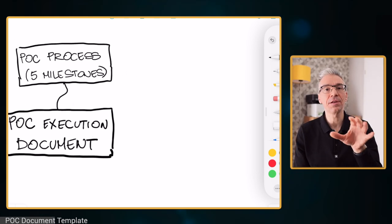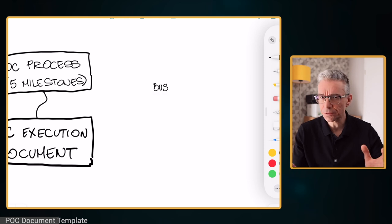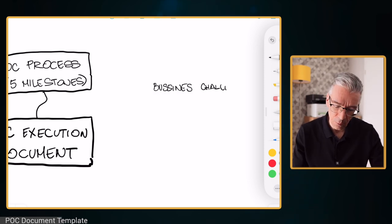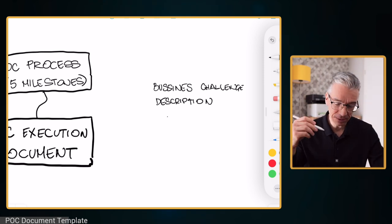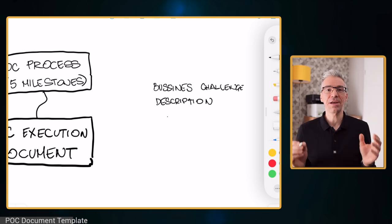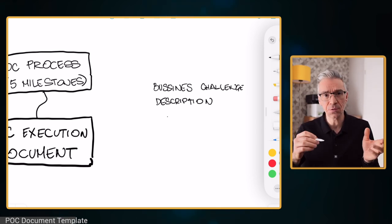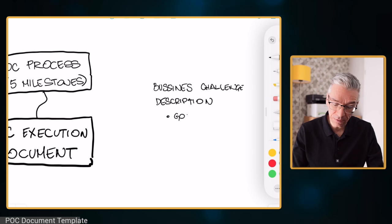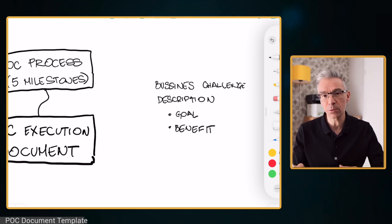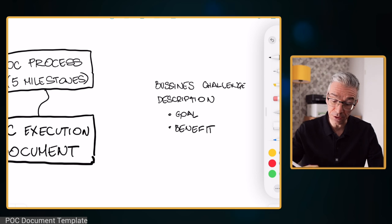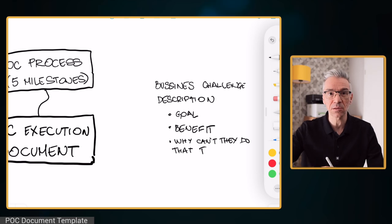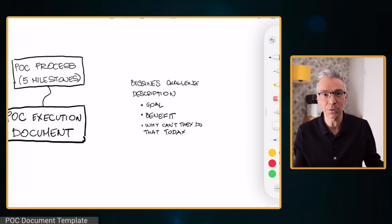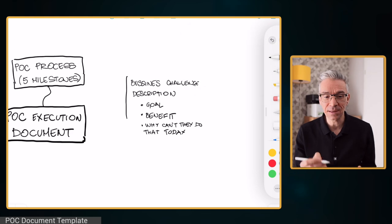We also want our technical champion to be aware of and think about the end business goal. So we want to describe the goal, what benefit they will have from our solution in reaching this goal, and also explicitly why they can't solve it today — which could be for a number of reasons. Ideally it is something that our technology can fix — that's why we are doing the POC.